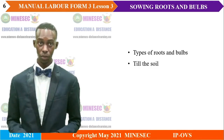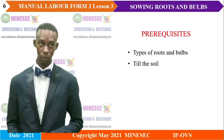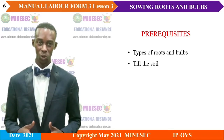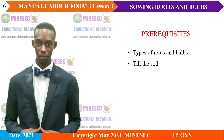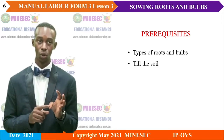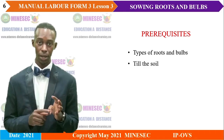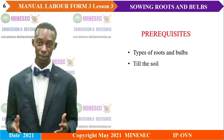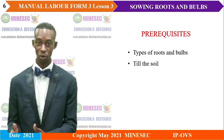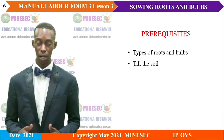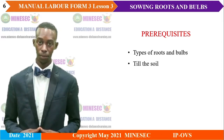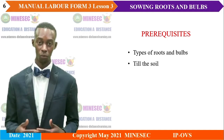Before we start, learners are expected to have knowledge on the following: types of roots and bulbs, including examples of local roots and bulbs in their environment. They should also have knowledge on tilling the soil, which is part of soil preparation.